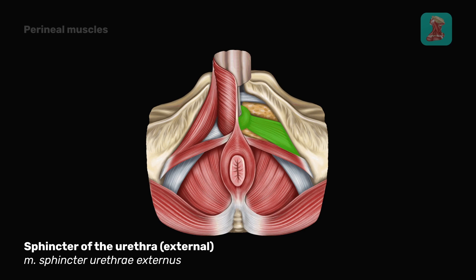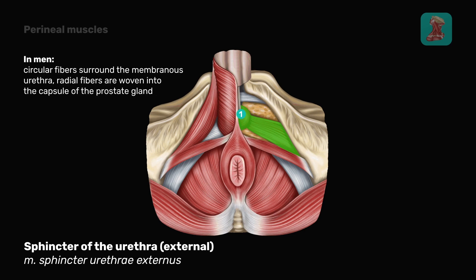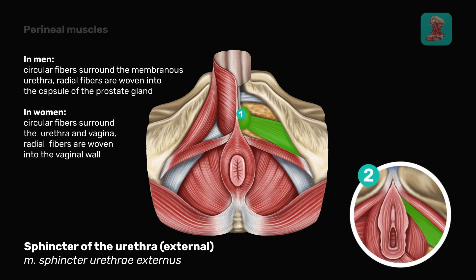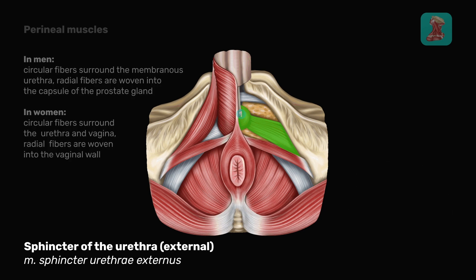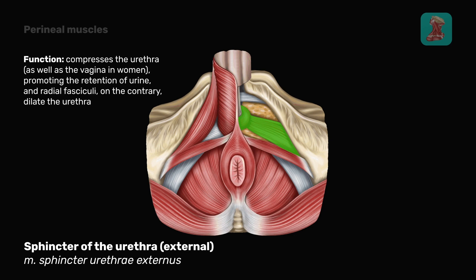The sphincter of the urethra: in men, circular fibers surround the membranous urethra, and radial fibers are woven into the capsule of the prostate gland. In women, circular fibers surround the urethra and the vagina, and radial fibers are woven into the vaginal wall. It compresses the urethra, as well as the vagina in women, promoting the retention of urine. Radial fasciculi, on the contrary, dilate the urethra.